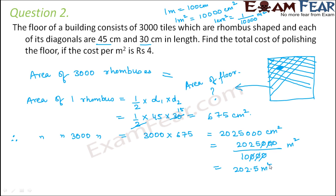So now let us try to find out the cost. So in the problem, it is given that the cost per meter square is rupees 4. That means cost for 1 meter square. So if the area is 1 meter square, then the cost is rupees 4. So therefore, if the area is 202.5 meter square, then the cost would be rupees 4 into 202.5, which is equal to rupees 810. So 810 would be the total cost of polishing the floor.